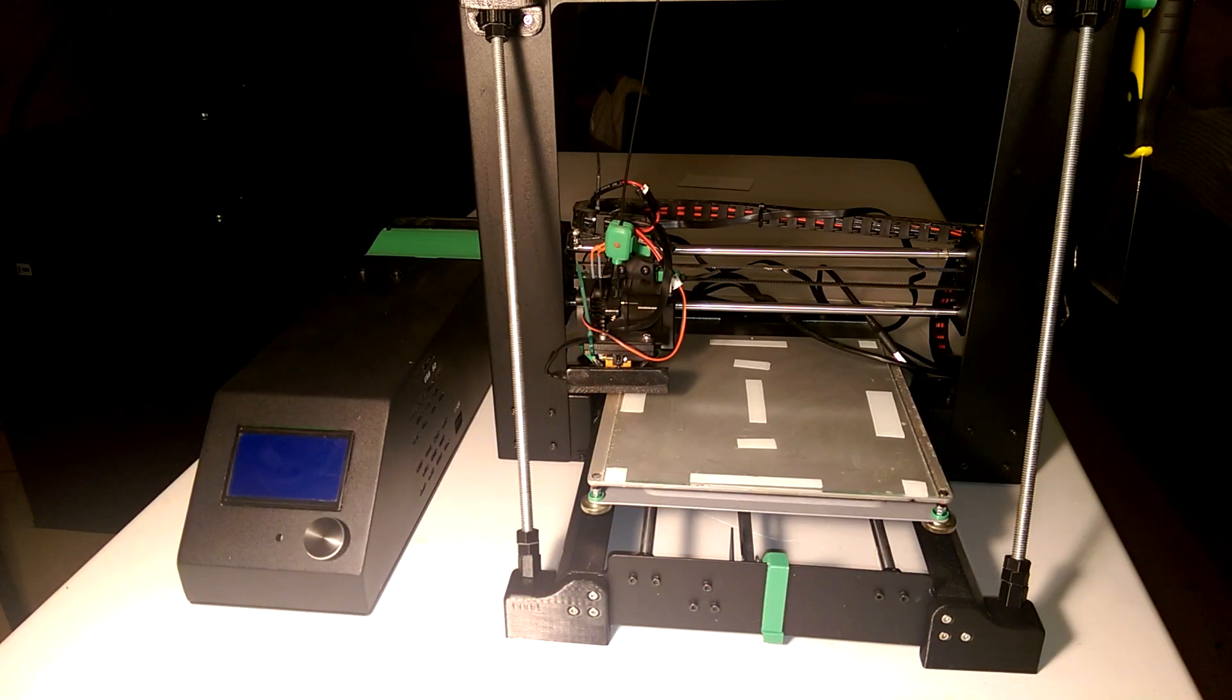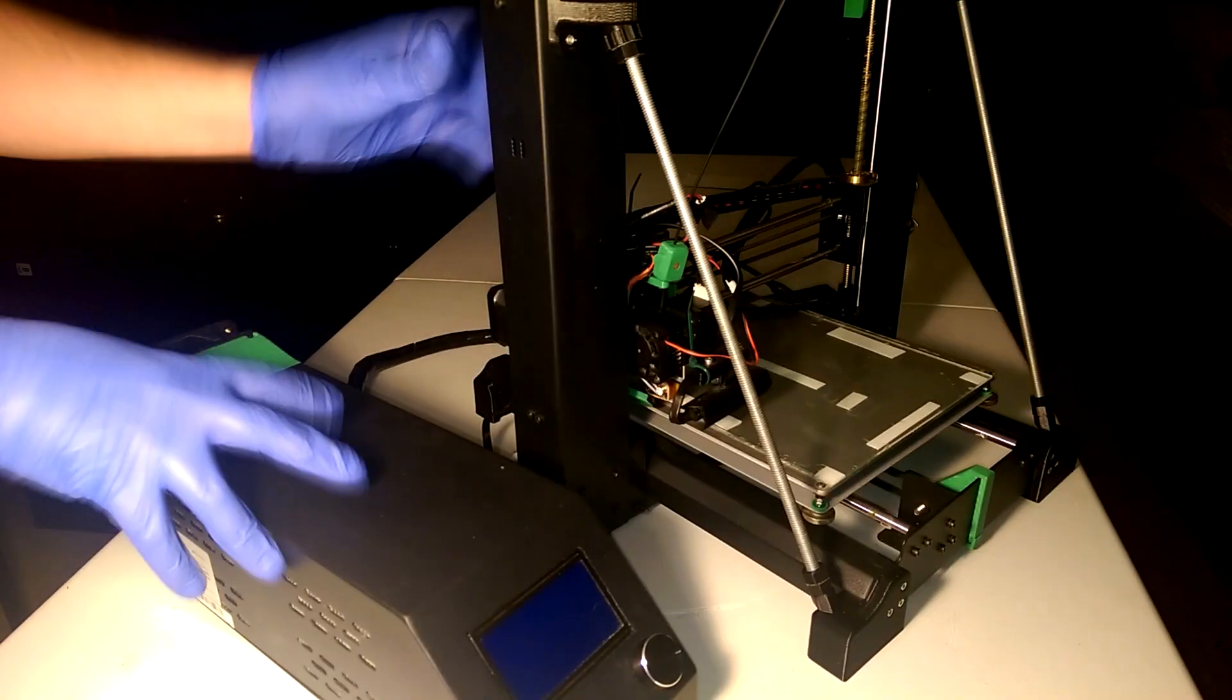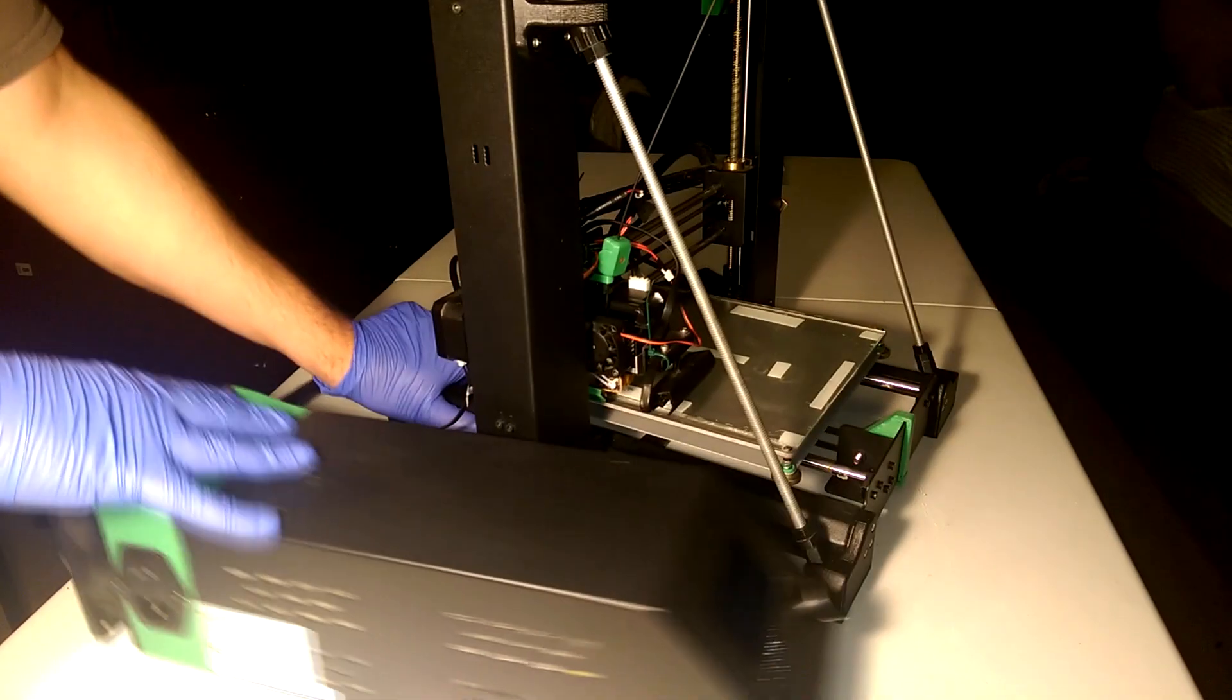In this video I'm going to be doing the ground upgrade on the Melzi board inside this Monoprice Maker Select 3D printer. It's really simple and only requires some basic soldering skills.